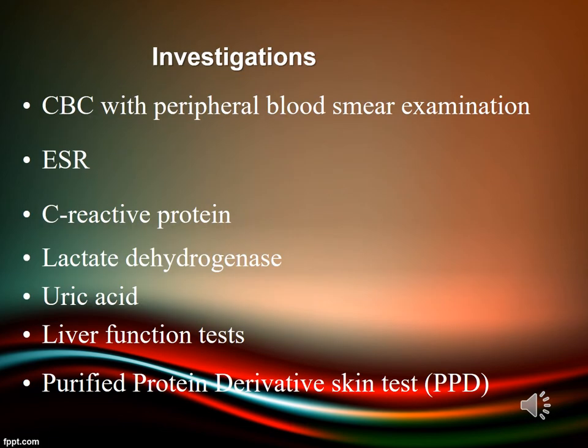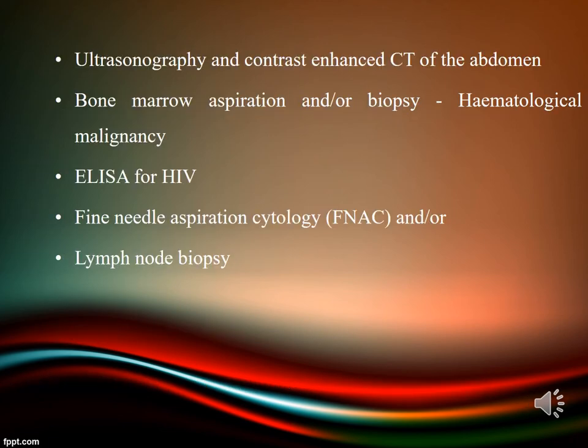For investigations, we should obtain a complete blood count with peripheral blood smear examination, ESR, C-reactive protein, LDH level, serum uric acid, liver function tests, and purified protein derivative (PPD) skin test. Ultrasonography and contrast-enhanced CT of abdomen to delineate hepatomegaly, splenomegaly, hepatic or splenic deposits, and intra-abdominal lymph nodes. Patients with cervical lymphadenopathy should have CT scan of head and neck to rule out cancers. Also bone marrow aspiration or biopsy for hematological malignancies, ELISA for HIV, and fine needle aspiration cytology.